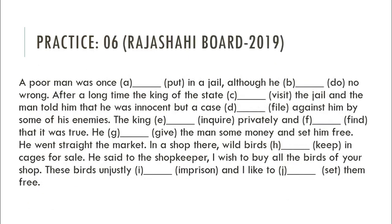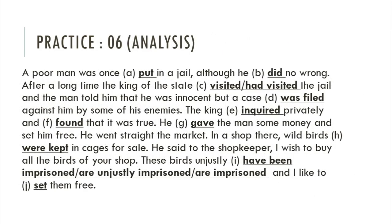Practice number six — Poor man. 'A poor man was once put in jail, although he did no wrong. After a long time, the king of the state visited the jail. The man told the king that he was innocent but a case was filed against him by some of his enemies. The king inquired privately and found that it was true. He gave the man some money and set him free. He went straight to the market. In a shop there, wild birds were kept in cages for sale. He said to the shopkeeper: I wish to buy the birds of your shop. These birds are unjustly imprisoned, and I like to set them free.'